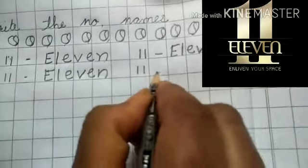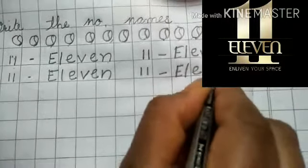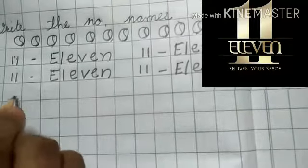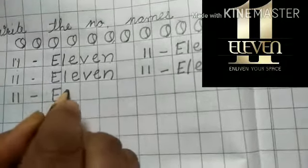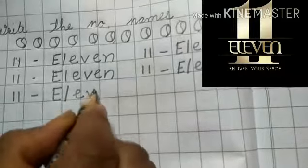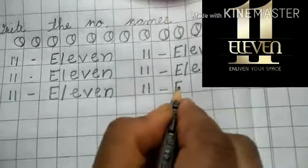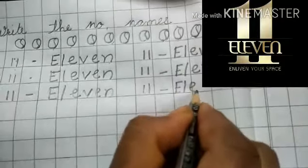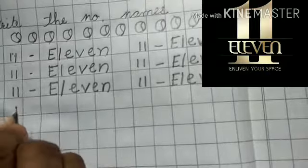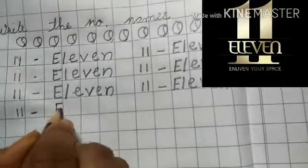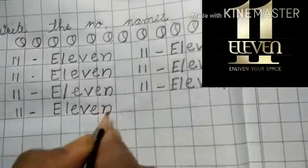11 dash. Write in front of line. 11 dash E L E V E N. Again write, 11 dash E L E V E N.